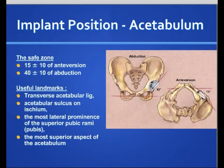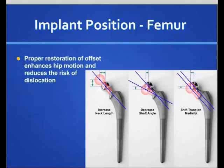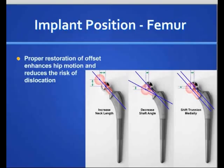In terms of implant position from the femoral side, proper restoration of the offset would reduce the risk of dislocation. There are many ways of achieving increased offset: increasing the neck length helps with offset, decreasing the neck-shaft angle also improves offset, or shifting the trochanter can affect the offset. The implant design — specifically the head-neck ratio — is also important. The higher the head-neck ratio, the less likely the risk of dislocation, because with a bigger head there is more excursion distance before dislocation, and with a smaller neck the head is less likely to impinge and cause dislocation.